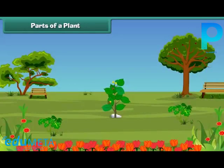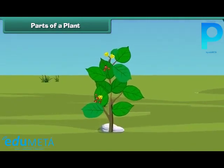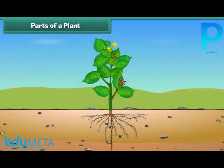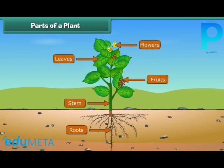Friends, let us discuss various parts of a plant. The main parts of a plant are roots, stem, leaves, flowers, and fruits. Let us know them one by one in more detail.